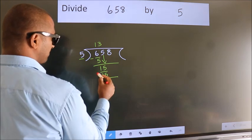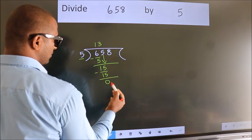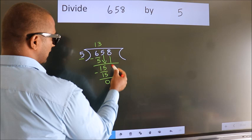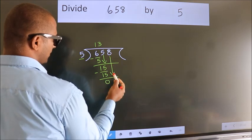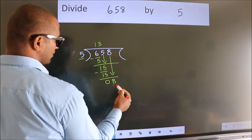Now we subtract. We get 0. After this, bring down the beside number. So, 8 down. So, 8.